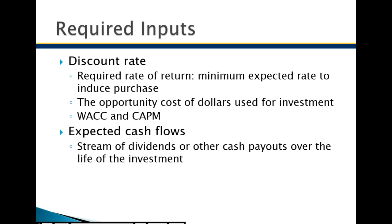The discount rate is common terminology in present value calculations. We can think of it as the required rate of return — the minimum expected rate to induce a purchase of the stock, or the opportunity cost of dollars used for the investment. If you know you can put your money elsewhere at a certain rate of return, say 6% relatively risk-free, you could use that as your K.